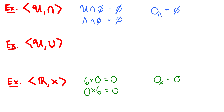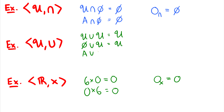What about the union operator? If I take any set unioned with the universe, I get the universe back. The empty set union the universe also gives the universe. So the zero for the union operation is the universe.